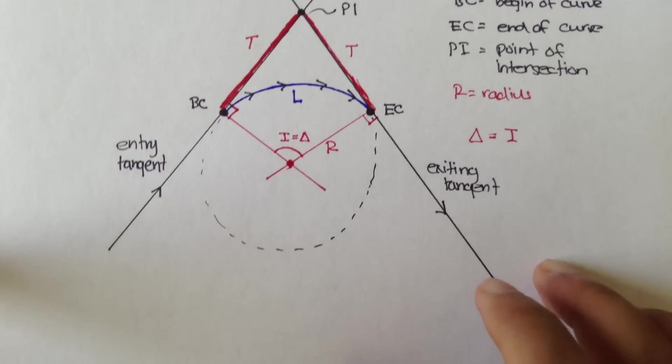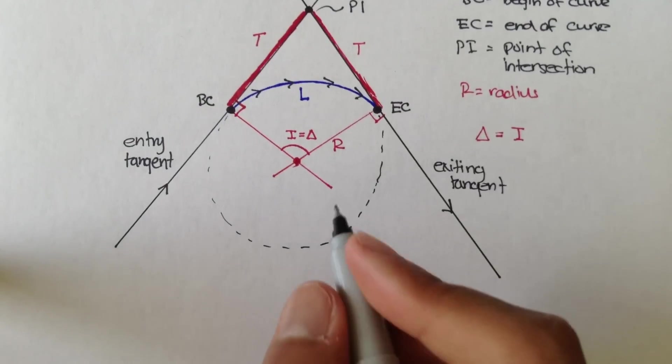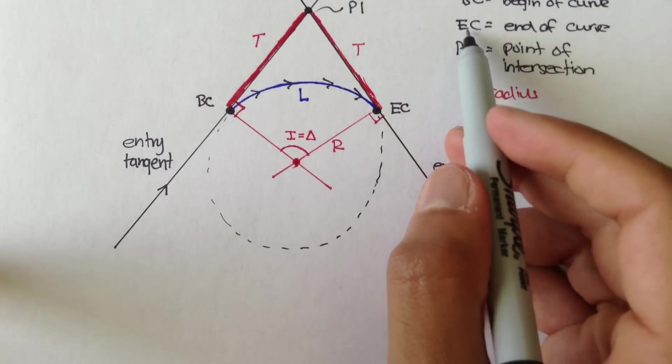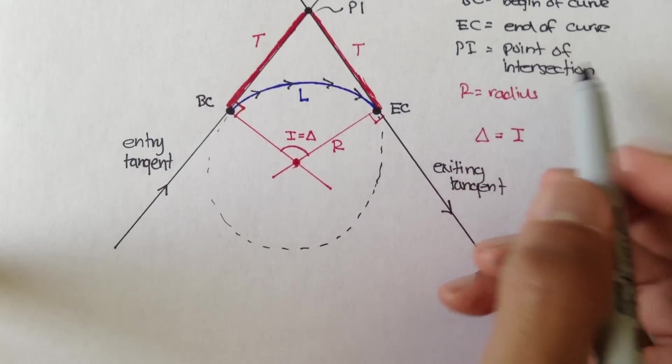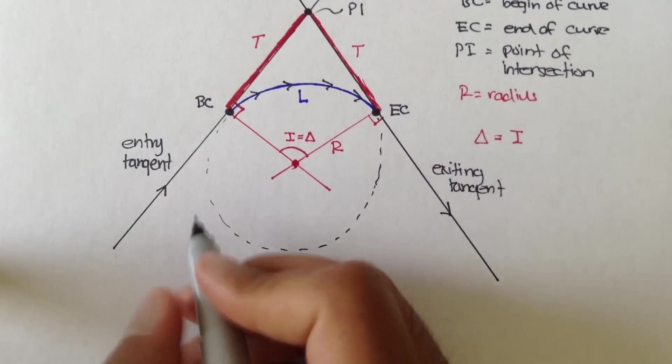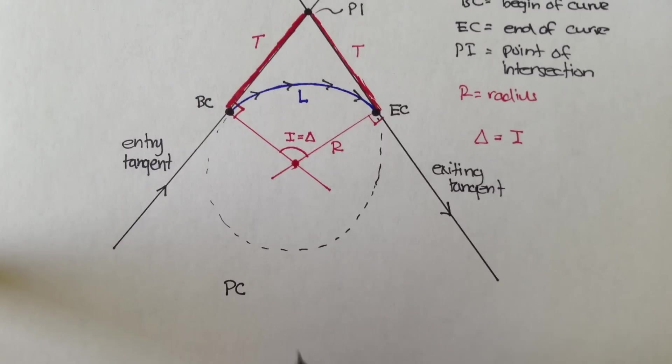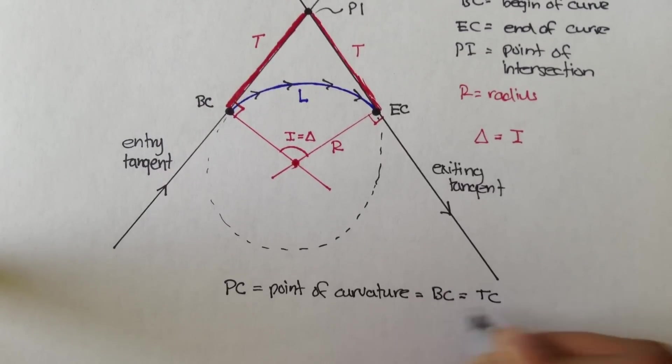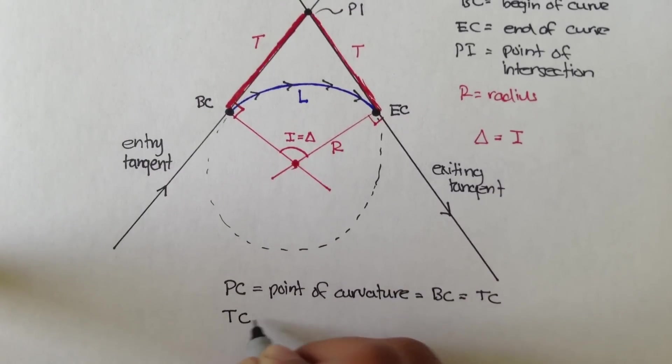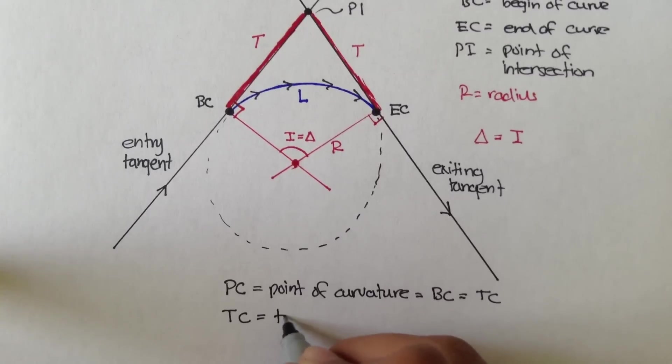A couple definitions. Remember, BC is beginning of curve, EC is end of curve, PI is point of intersection. We can also define PC, which stands for point of curvature, and that's simply the BC. Or the TC. So the BC is the beginning of curve. TC stands for tangent curve.